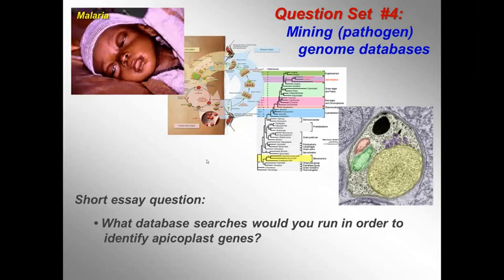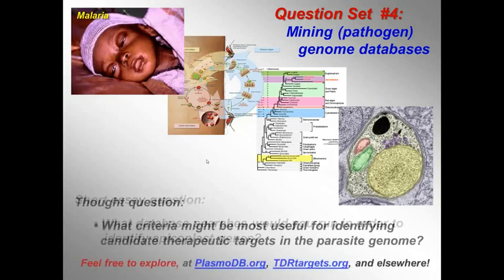Question 4.3: What database sources would you use if you wanted to identify nuclear-encoded apicoplast genes? And finally, a thought question raised at the beginning: what criteria would be most useful for identifying candidate therapeutic targets in the parasite genome? You should, of course, feel free to explore this at plasmodb.org, tdrtargets.org, and elsewhere.